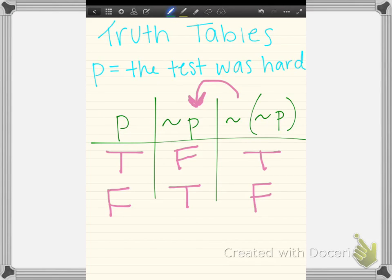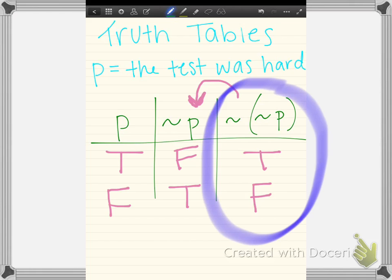What's pretty cool about this is if you look at this column right here that I just circled, the negation of not P is the same thing as P: true, false. And so that was the whole idea that we had mentioned earlier. When we talk about the double negation, it just brings us back to our original statement, which is pretty cool.